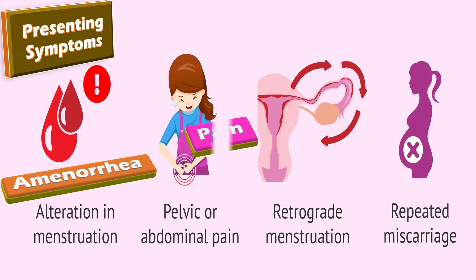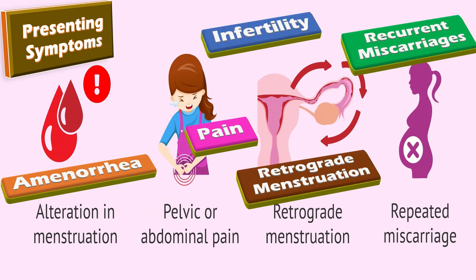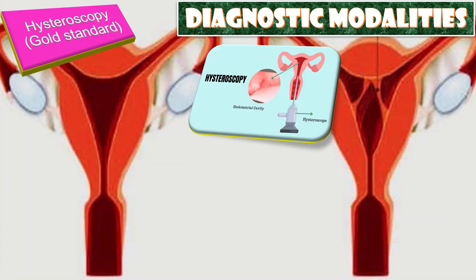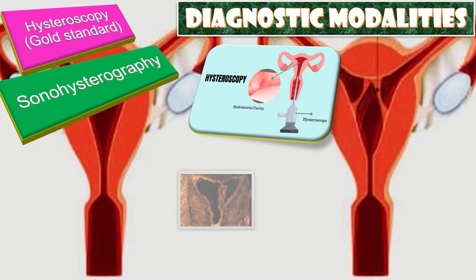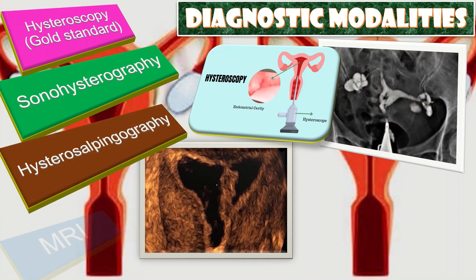With what symptoms does a patient with Asherman syndrome present? The presenting symptoms include amenorrhea, pain due to trapped blood, retrograde menstruation, recurrent miscarriages, and infertility. How to diagnose Asherman syndrome? The diagnostic modalities include hysteroscopy, which is the gold standard test, sonohysterography, hysterosalpingography, and MRI.